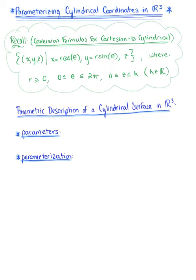The first thing we're going to look at is parameterizing cylindrical coordinates in R3. Let's begin by recalling the conversion formulas for Cartesian to cylindrical coordinates.